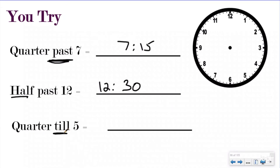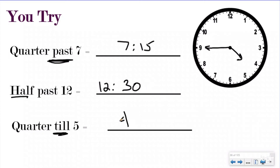And then the last one, we have quarter till 5 o'clock. So we know that it's not quite 5 o'clock yet, so my hour hand should be somewhere over here. And if it was 5 o'clock, my minute hand would be pointing right at the 12. So quarter till 5 means we're one-fourth of an hour away from 5. The minute hand would be here because that'd be one-fourth, two-fourths, three-fourths, then four-fourths. So we're one-fourth of an hour away from 5, which means it is going to be 4:45. We're quarter till 5, meaning we have one-fourth of an hour left until it's 5 o'clock.